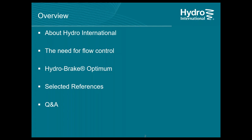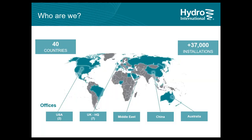Hydro International is headquartered in the UK in Clevedon near Bristol. We have six other offices in the UK, two in the US, one in Dubai, one in Melbourne Australia, and one in China. Anything outside of the Americas and Europe is overseen from our Dubai office. We work with water companies, design consultants, contractors, and municipalities all over the world. Hydro International has more than 340 employees.